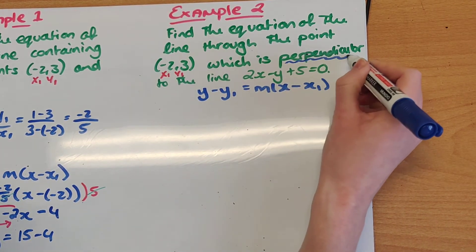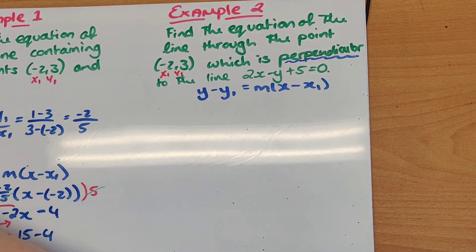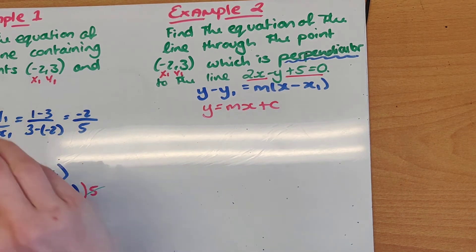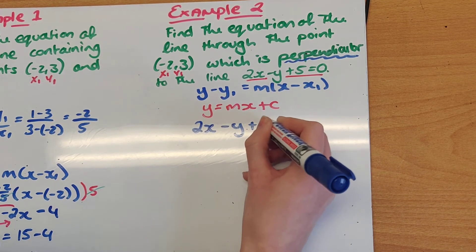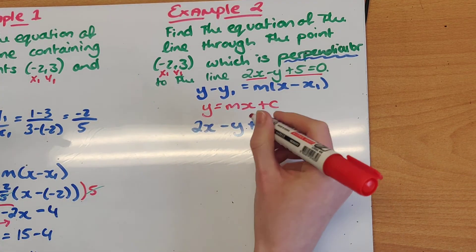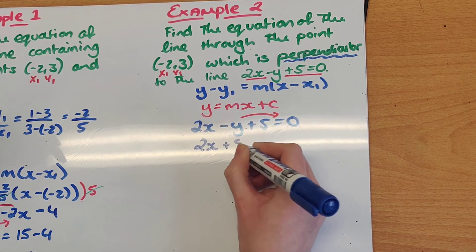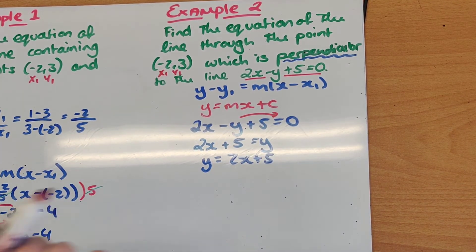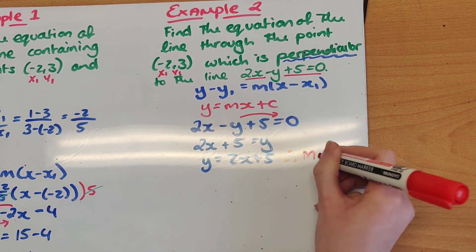The line I'm looking for is perpendicular to the given line. Using the formula y equals mx plus c, I can find the slope of the given line, but I need to isolate y. I have 2x minus y plus 5 equals 0. Bringing y over, it becomes a plus: 2x plus 5 equals y, which is the same as y equals 2x plus 5. So my slope is the number in front of x, which is 2. So m equals 2.